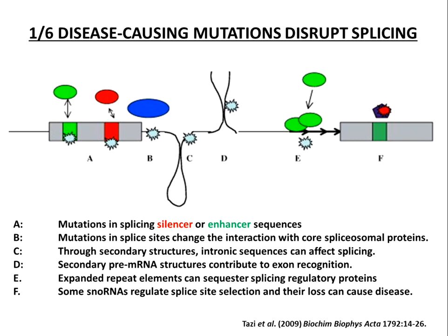Mutations can affect regulatory sequences within exons and introns that regulate splicing, the actual splice sites themselves, or very subtle mutations that alter the structure of pre-messenger RNA which can affect the efficiency of splicing at a particular site. The salient point is that one in six disease-causing mutations disrupt splicing, and there are many cancer-causing or cancer-associated mutations in which splicing is disrupted.